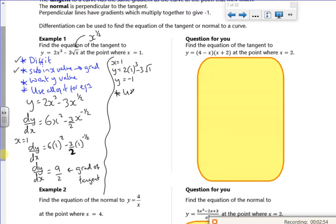Right. So now I'm going to use my coordinate point is 1 comma minus 1. Because x is 1 and y is minus 1. And my gradient is 9 over 2. So I'm going to use y minus y1 is m times x minus x1. Do you remember that equation? So I've got y minus a minus 1 is 9 over 2 times x minus 1. And I'm going to leave it like that.